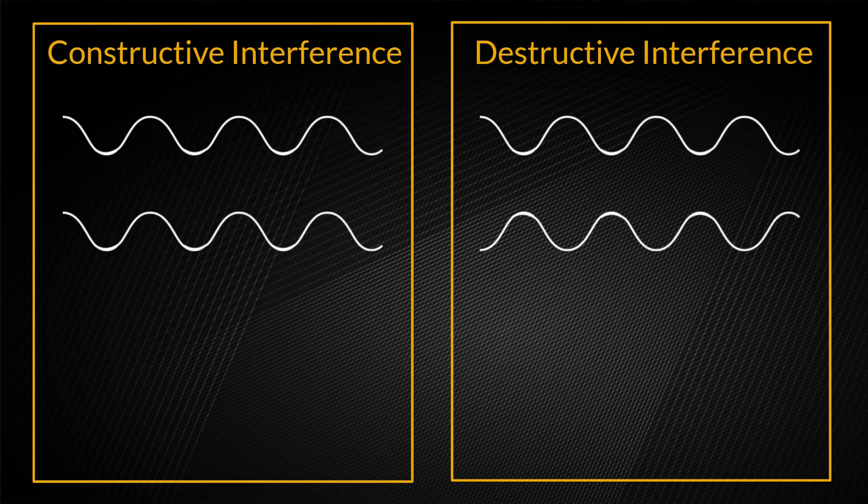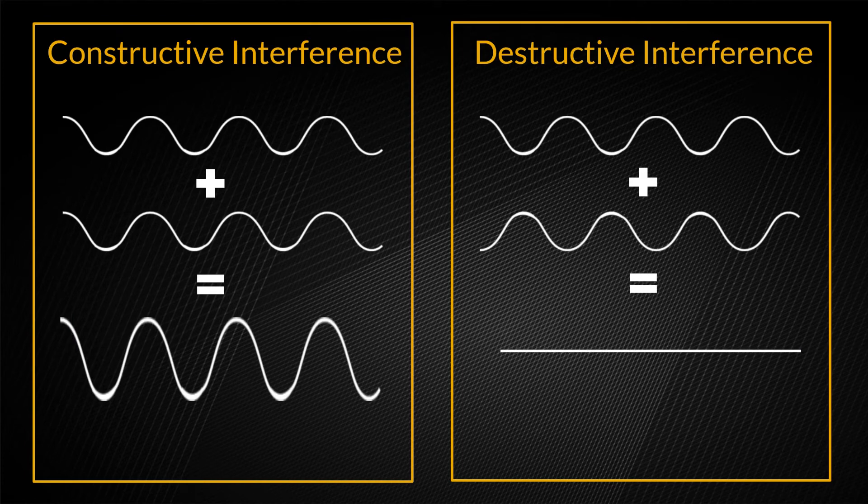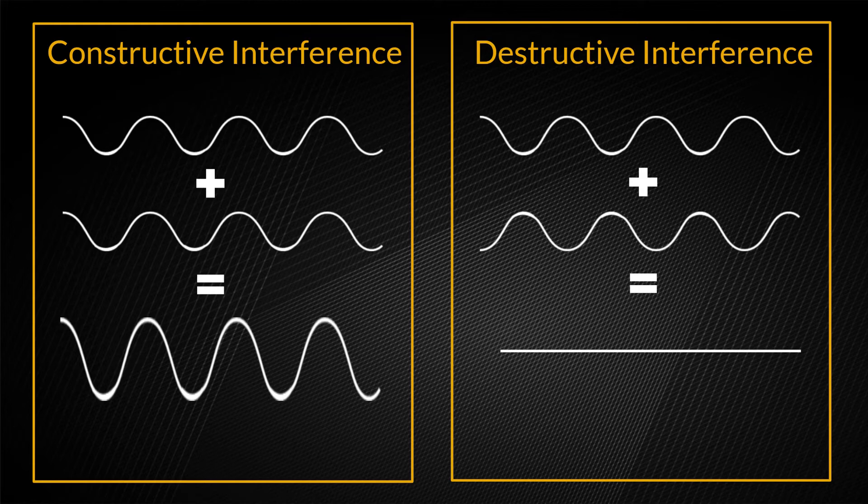So what is the difference between constructive and destructive wave interference? When X-ray waves interact, they sum together to create either amplified waves or suppressed waves. The type of interference that occurs depends on the phase of the X-rays, whether the wave peaks line up with each other or not.